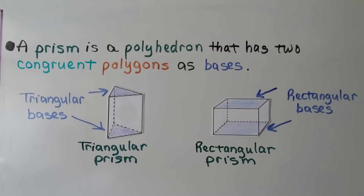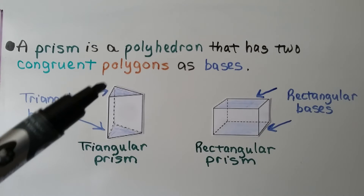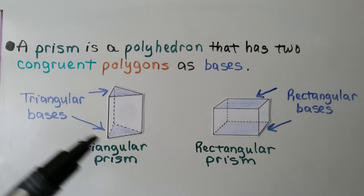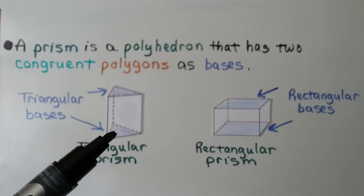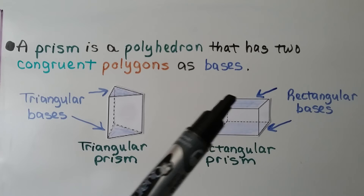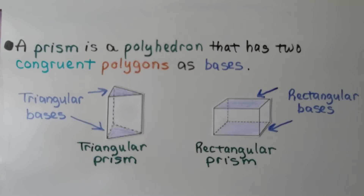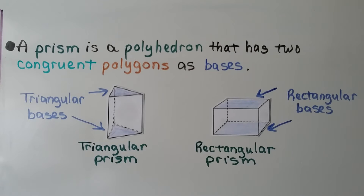A prism is a polyhedron that has two congruent polygons as bases. So this triangular prism has a triangle on the top and a triangle on the bottom as its bases, and both triangles are congruent to each other. Here we have a rectangular prism, and it's got a rectangle on the top and a rectangle on the bottom as its bases, and those rectangles are congruent to each other.